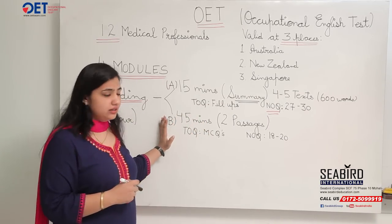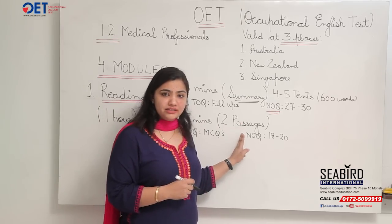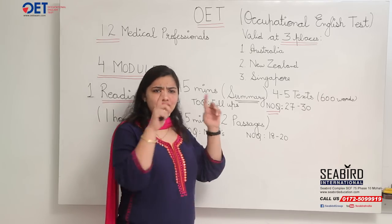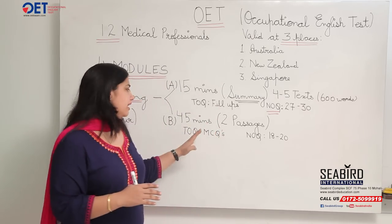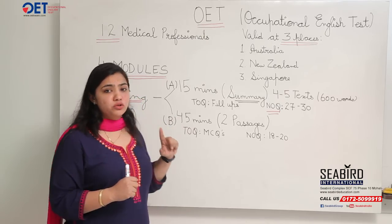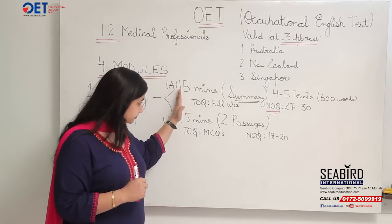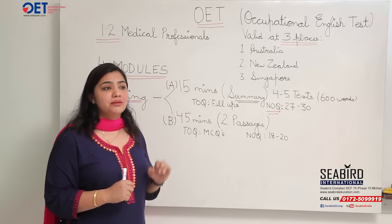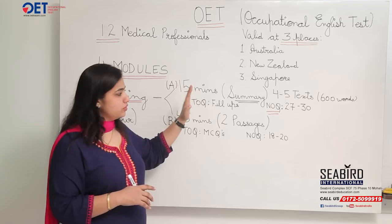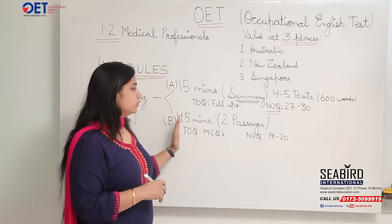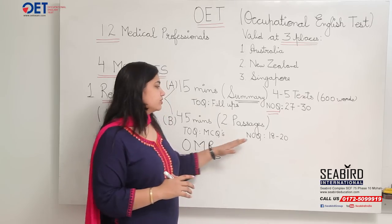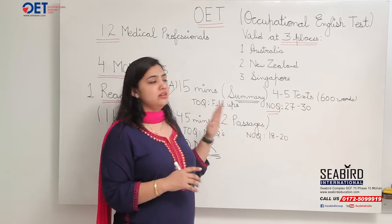Part B is 45 minutes and consists of two passages — similar to comprehension passages we did in senior secondary school where you hunt for answers. The question type is MCQs and the number of questions is around 18 to 20. Importantly, after completing Part A, they will take your answer sheets away before you start Part B. In Part B, you will also get OMR sheets, and there is no extra time given to transfer your answers.